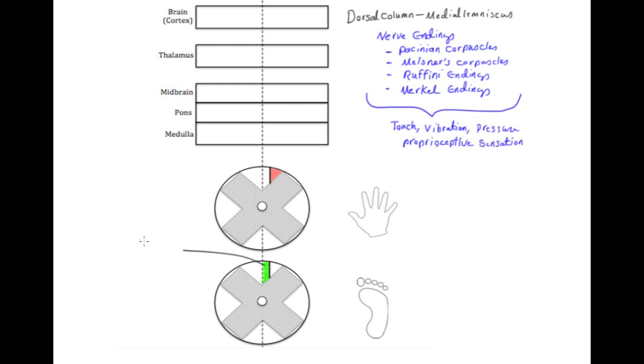It is very important to know that there are two dorsal column nuclei that participate in this sensory pathway. For the lower extremity, the gracilis nucleus, and for the upper extremity, the cuneate nucleus.